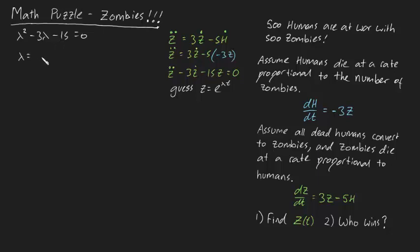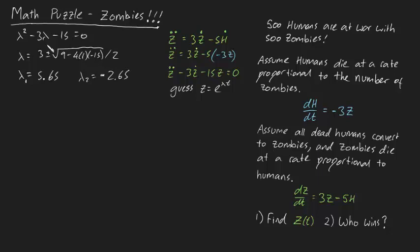Using the quadratic formula, lambda equals negative b plus or minus the square root of b squared minus 4ac, all divided by 2a. When you go through the maths you can show that one value of lambda is 5.65 and the other value is minus 2.65. So the generalized solution for the number of zombies at any instant is Z equals A times e to the 5.65t plus B times e to the minus 2.65t.